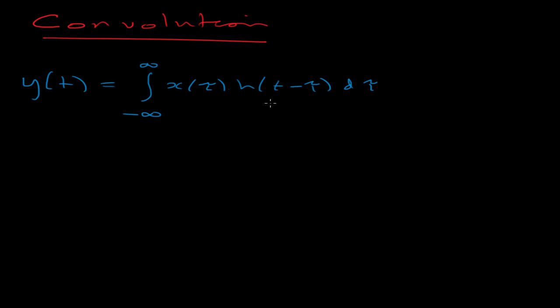What can we say about this equation? First of all I can name what these symbols are. y is the output of the system, x is the input to the system, and h is what's called the impulse response.